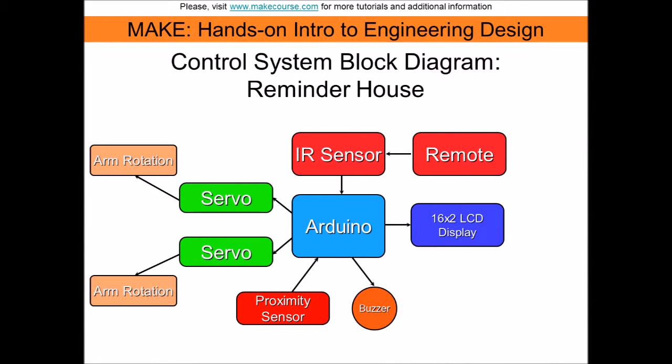As you can see from this block diagram, my control system has multiple input and output devices. The LCD display, two servos, and buzzer are output, and the IR and proximity sensors are used as input.